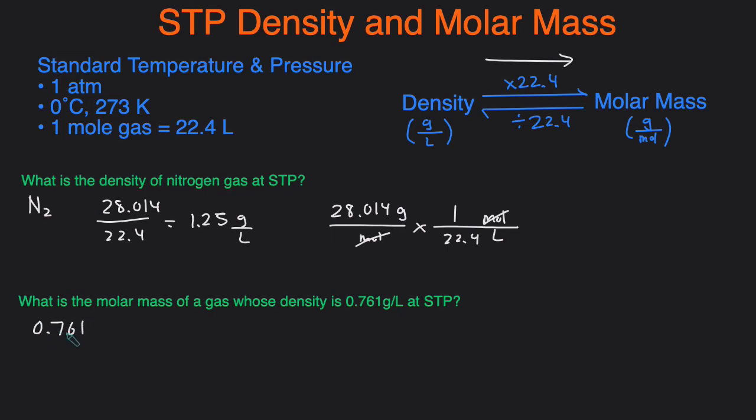We'll do 0.761 multiplied by 22.4 and then that'll give us 17.0 grams per mole because those are the units for molar mass. And if you have to show your work it'll look as such. You would just multiply by 22.4 liters over 1 mole so then the liters can cancel out and then you'll be left with grams per mole.